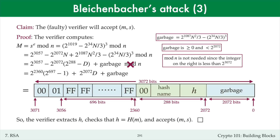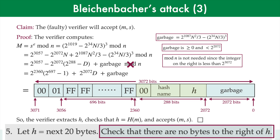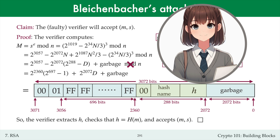A countermeasure to Bleichenbacher's attack is, of course, a check in step 5 that there are no more bytes after the hash value has been extracted. It's very striking that the small omission in the description of signature verification in the PKCS standard led to devastating attacks in many deployments of RSA signatures. This episode offers two lessons. The first is that seemingly small errors in implementations of cryptographic algorithms can have devastating consequences. The second lesson is the importance of clear communications — providing clear descriptions of cryptographic algorithms that might be read by developers who aren't necessarily experts in cryptography.